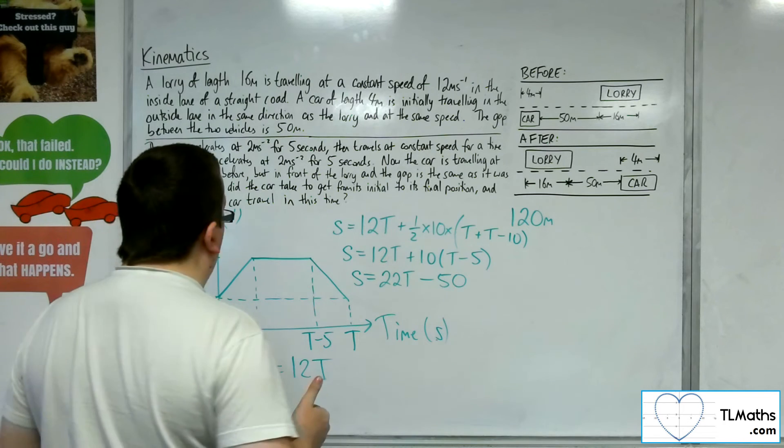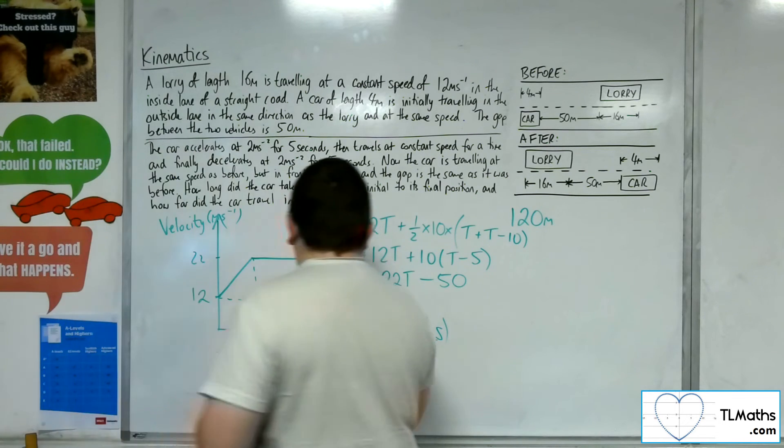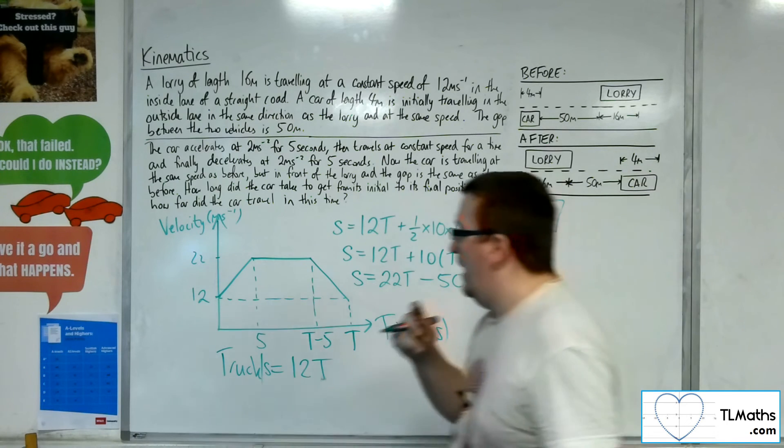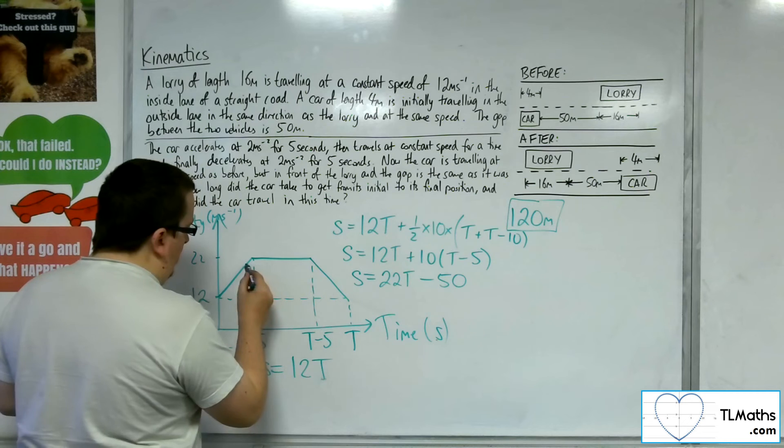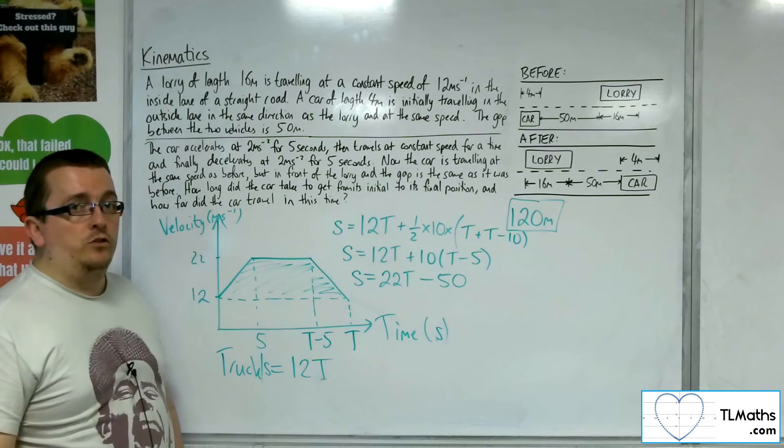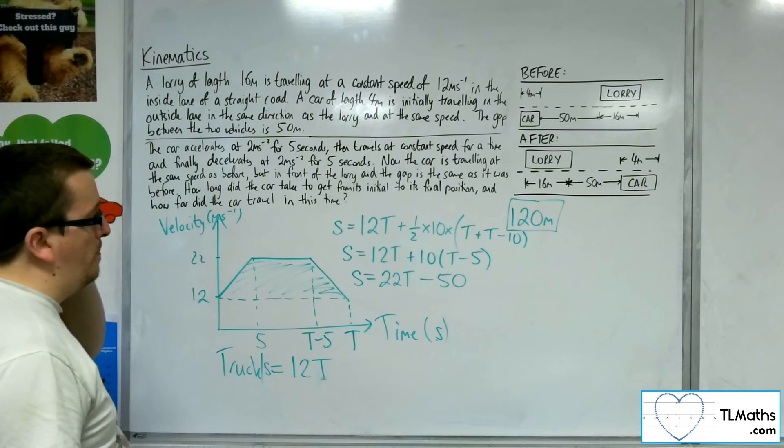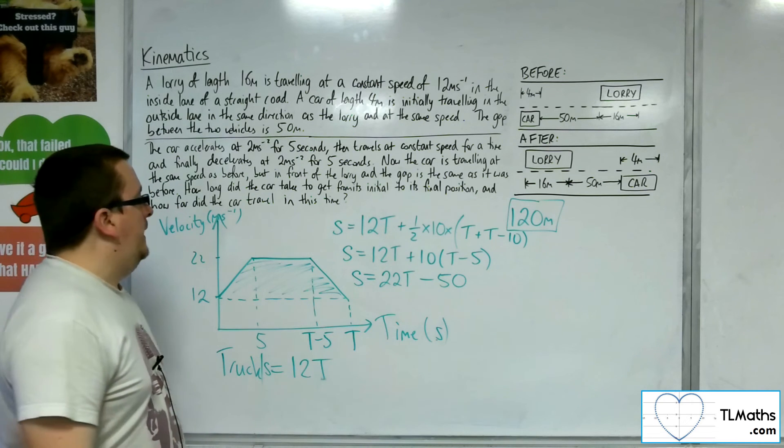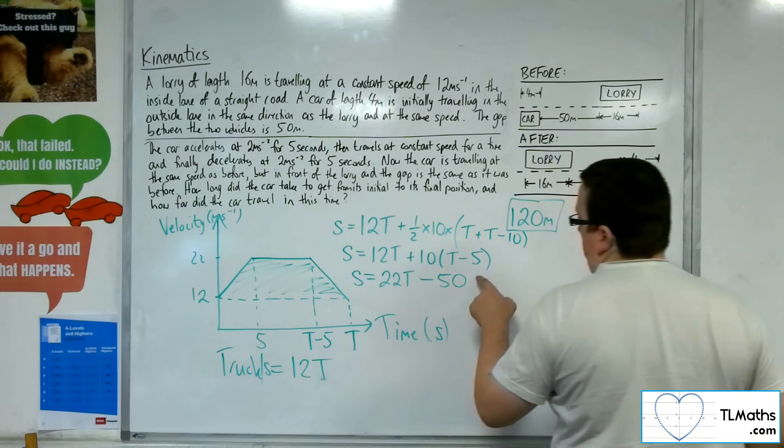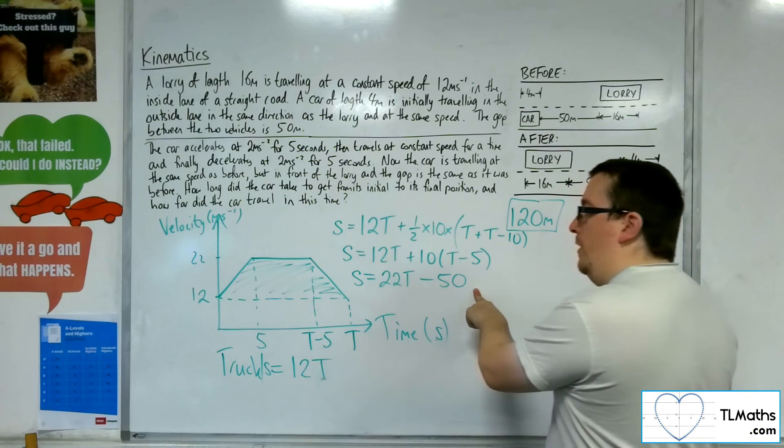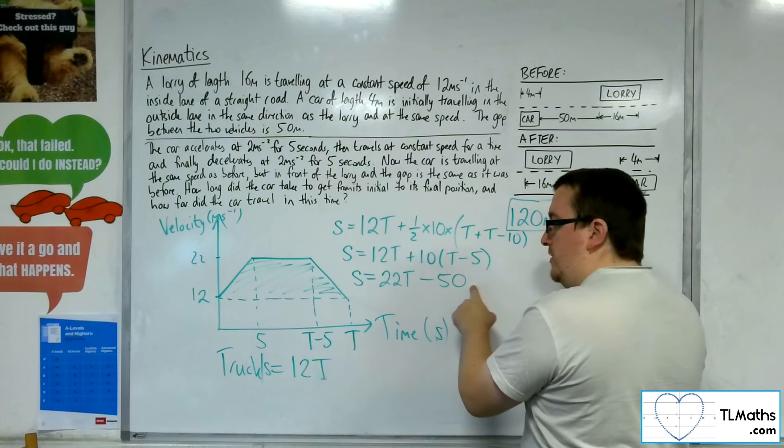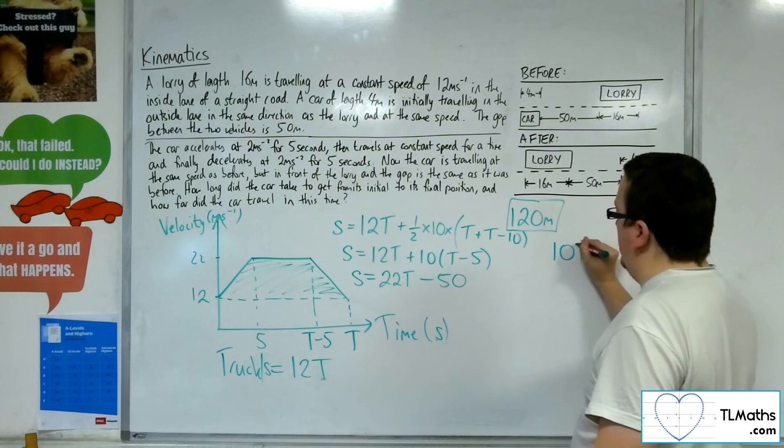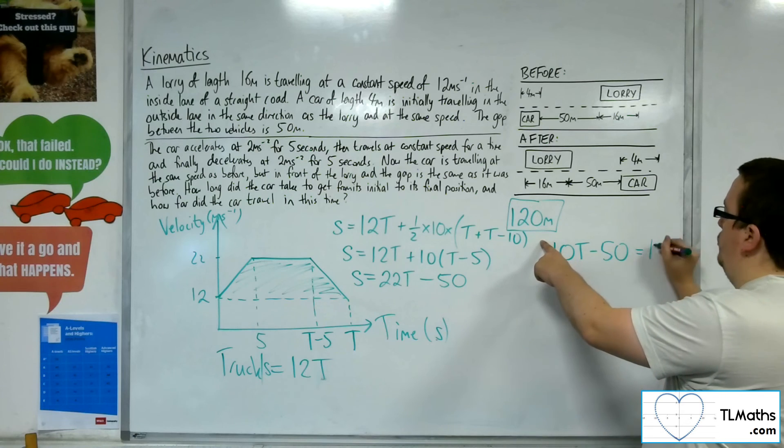As we know that the car travels 120 metres relative to the truck, that means that this area that I've got here must be equal to the 120 metres. That extra bit that the car has travelled on top of how far it's gone overall is the 120 metres. I know that that is the displacement for the car. What I need to do is I need to look at that, take away the 12T that both the car and the truck have travelled. So that leaves me with 10T, take away 50, and that is going to be equal to the 120 metres.